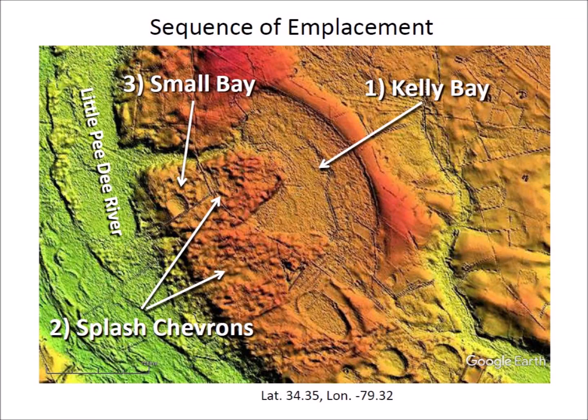Kelly Bay in South Carolina demonstrates the sequence of emplacement during a brief period of saturation bombardment by glacier ice boulders from 6 to 9 minutes after the extraterrestrial impact. First, Kelly Bay was created along the river by an impact of glacier ice.